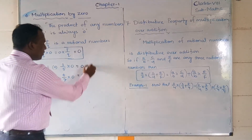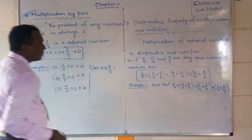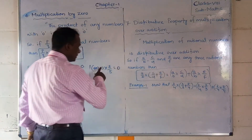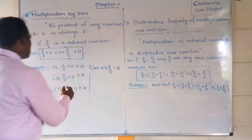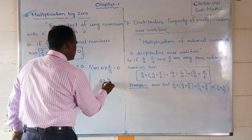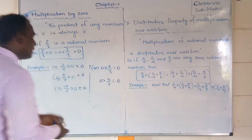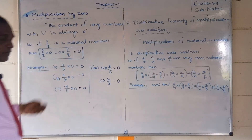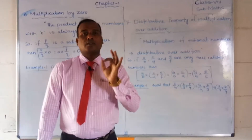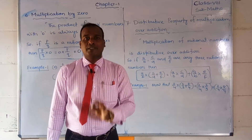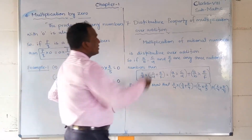Similarly, 0 × 3/5 = 0, and 0 × 4/7 = 0. The product is always 0. So when we multiply any rational number with 0, or 0 with any rational number, the product is always 0. Now we are going to learn the seventh property — distributive property of multiplication over addition.